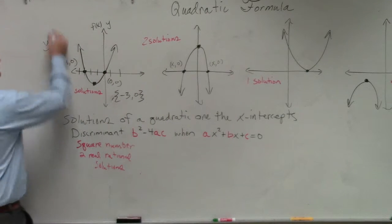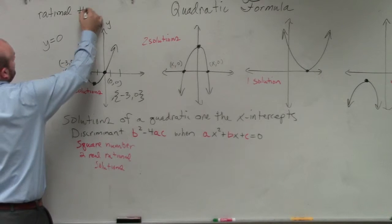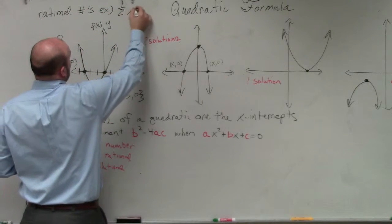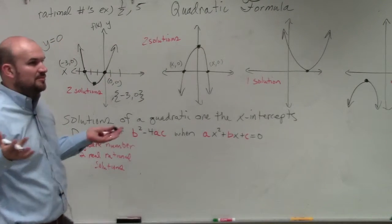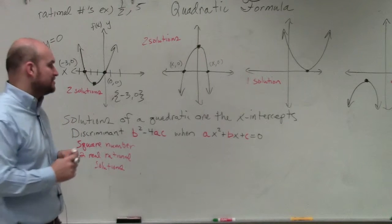It's right over here. Rational numbers, examples of rational numbers would be like 1 half or 5. Those are all examples of rational numbers. Fractions and integers are examples of rational numbers.